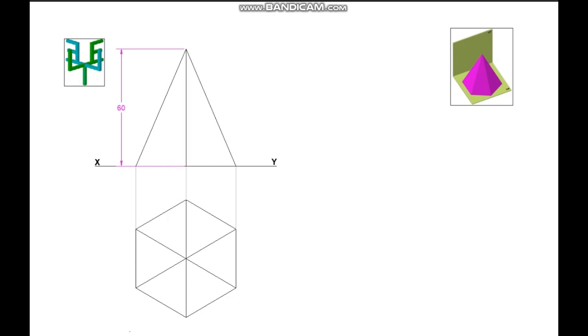Name the base corners in the plan as 1, 2, 3, 4, 5, and 6, and the apex point as O. Name the corresponding points of elevation as 1', 2', 3', 4', 5', 6', and the apex point as O'.